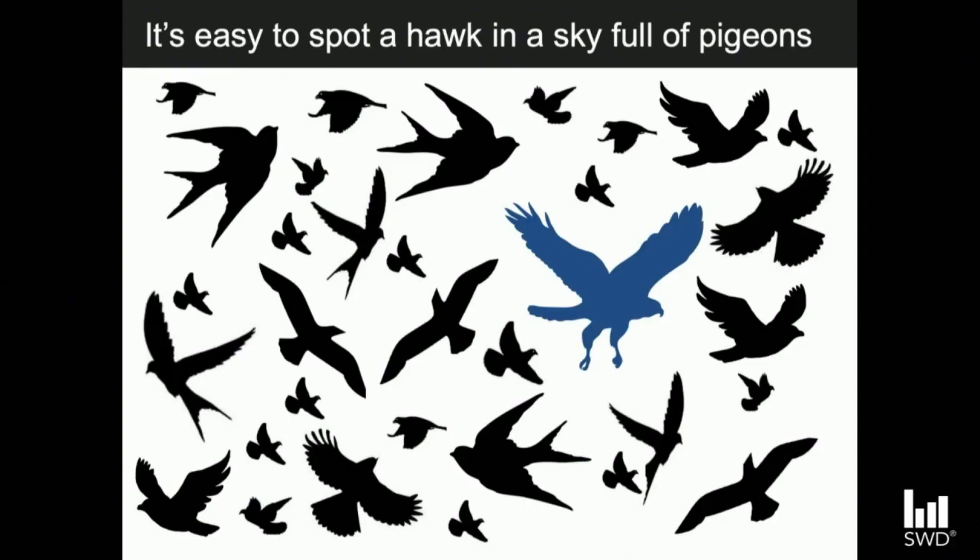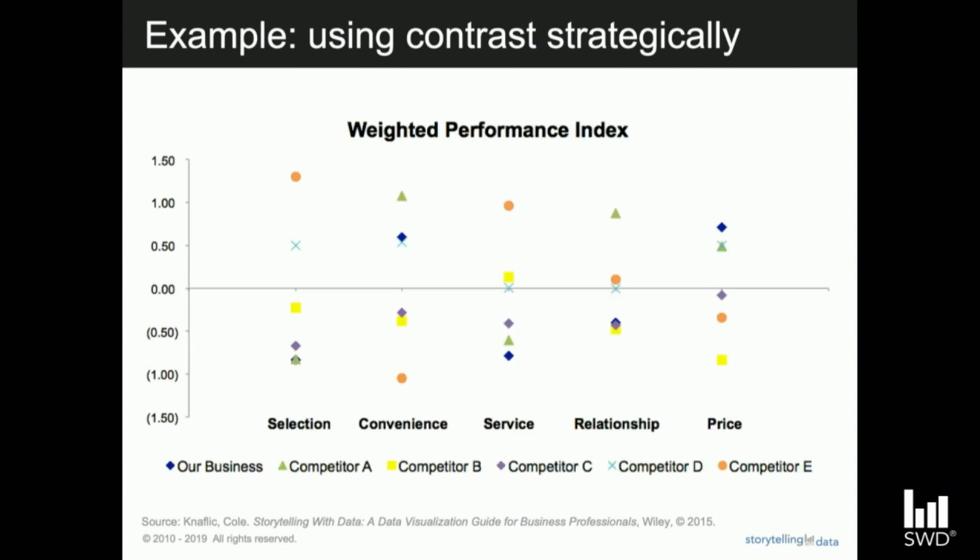Let's take a look at how we can use this in a graph. In a moment, I'm going to put a graph in front of you. What I'd like you to do is just react to it — shout out the first word that this graph makes you feel. There was a general groan in the room, and I heard words like confused, overwhelmed, cluttered. These are reactions we want to try to avoid in our audience — groaning feelings of overload.